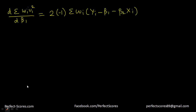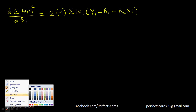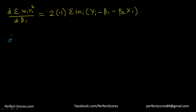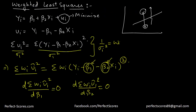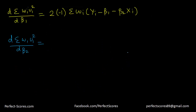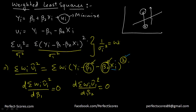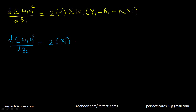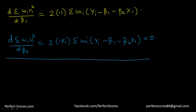Finding the second derivative — with respect to β2 — we take the derivative of the summation of wi·ui² over dβ2. Again, the 2 comes to the front, and since there is also an xi associated with β2, we get a negative xi term, giving: 2 times negative xi times the summation of wi times (yi minus β1 minus β2xi). We then equate both derivatives to zero.